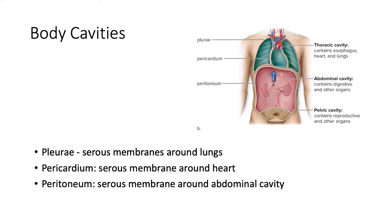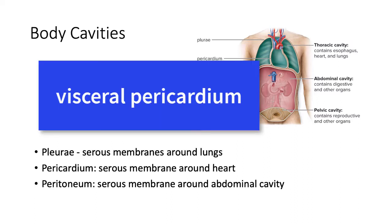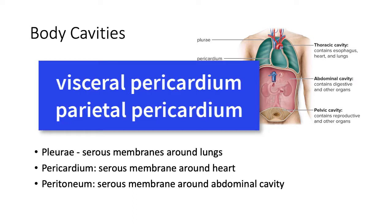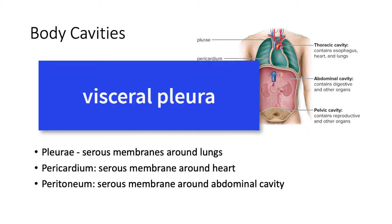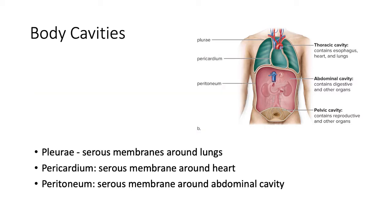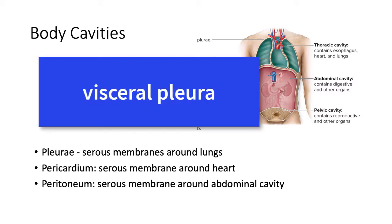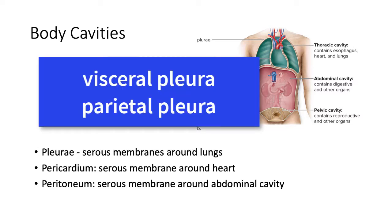Remember that the serous membranes line body cavities that are not open to the outside. Each of these cavities has its own name. The membranes around the lungs are called the pleura, the membranes around the heart are called the pericardium, and the membranes around the abdominal cavity are the peritoneum. These are serous membranes and have double layers. So the layer closest to the heart is the visceral pericardium, and the layer further away from the heart is the parietal pericardium. The layer closest to the lungs is the visceral pleura, and the layer further away is the parietal pleura. For the abdominal cavity, the layer closest to the organs is the visceral peritoneum, and the layer further away is the parietal peritoneum.